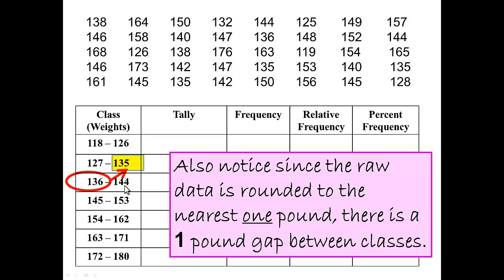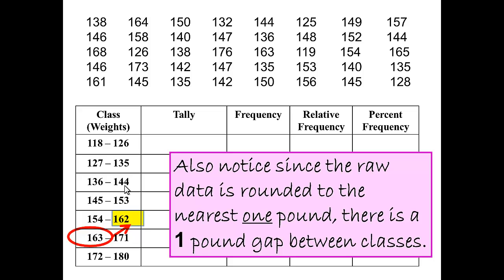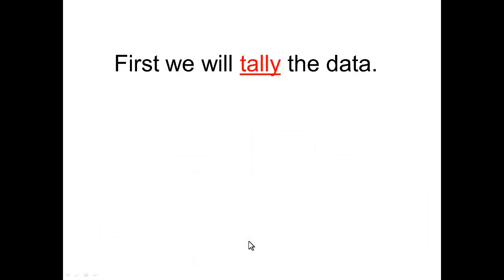There is also one pound between class two and class three — it jumps from 135 to 136. Between classes three and four it goes from 144 to 145, and the pattern continues: 153 to 154, 162 to 163, and 171 to 172. We have no weights that fall in between the classes because all of the data is rounded to the nearest one pound, leaving that one-pound gap.